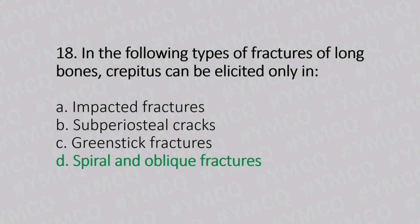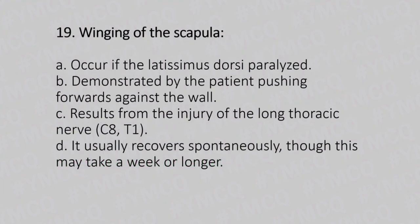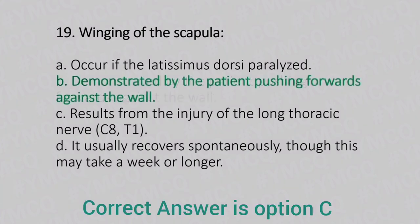Now let's move to question number 19. Winged scapula. Option A: occurs in latissimus dorsi paralysis. Option B: demonstrated by the patient pushing forward against the wall. Option C: results from injury of the long thoracic nerve. Option D: it usually recovers spontaneously, though this may take weeks or longer. And the answer is Option D, it usually recovers spontaneously.